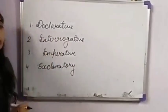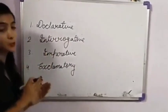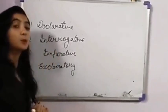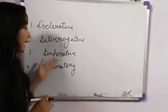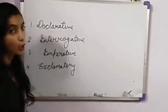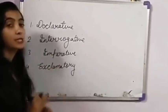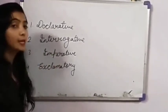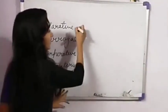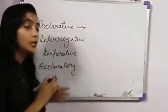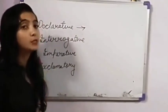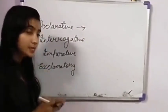So declarative sentence hota hai ek statement, okay, jo hume ek information deta hai. Interrogative sentence mein puchhe jate hain questions. Imperative sentences hote hain request, command, or order wale. Exclamatory sentences woh hote hain jo kahi jate hain strong feeling ke saath. So declarative sentence ki jo pehchaan hoti hai, woh yeh hoti hai ki yeh last mein leta hai full stop, aur saath hi hota hai yeh statement.